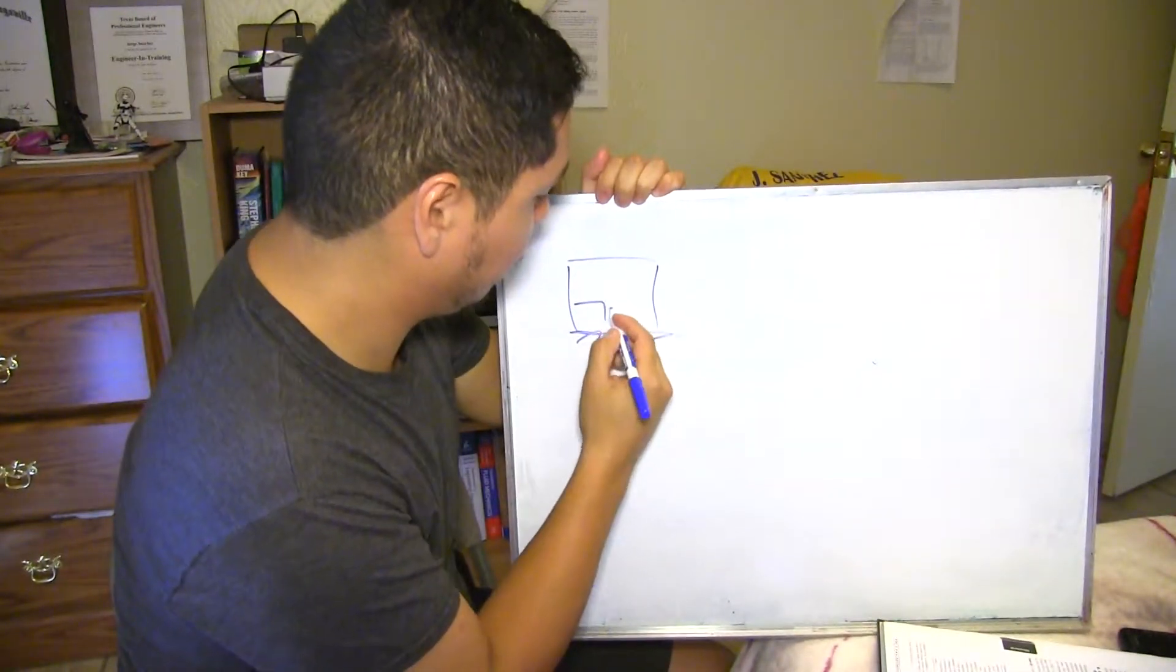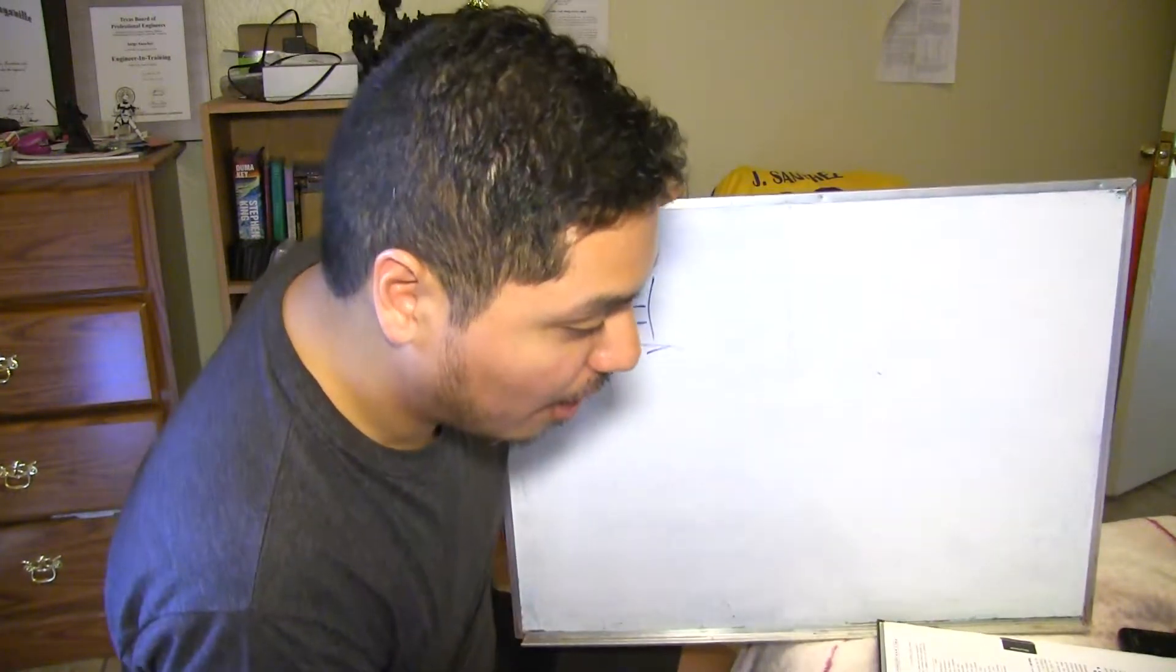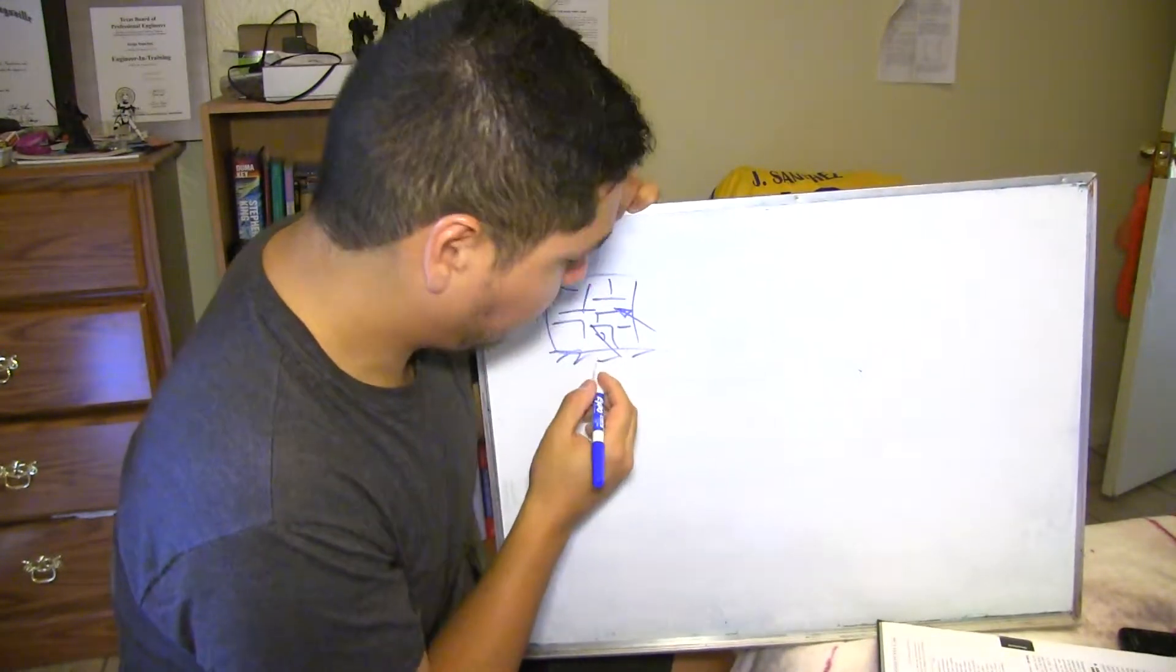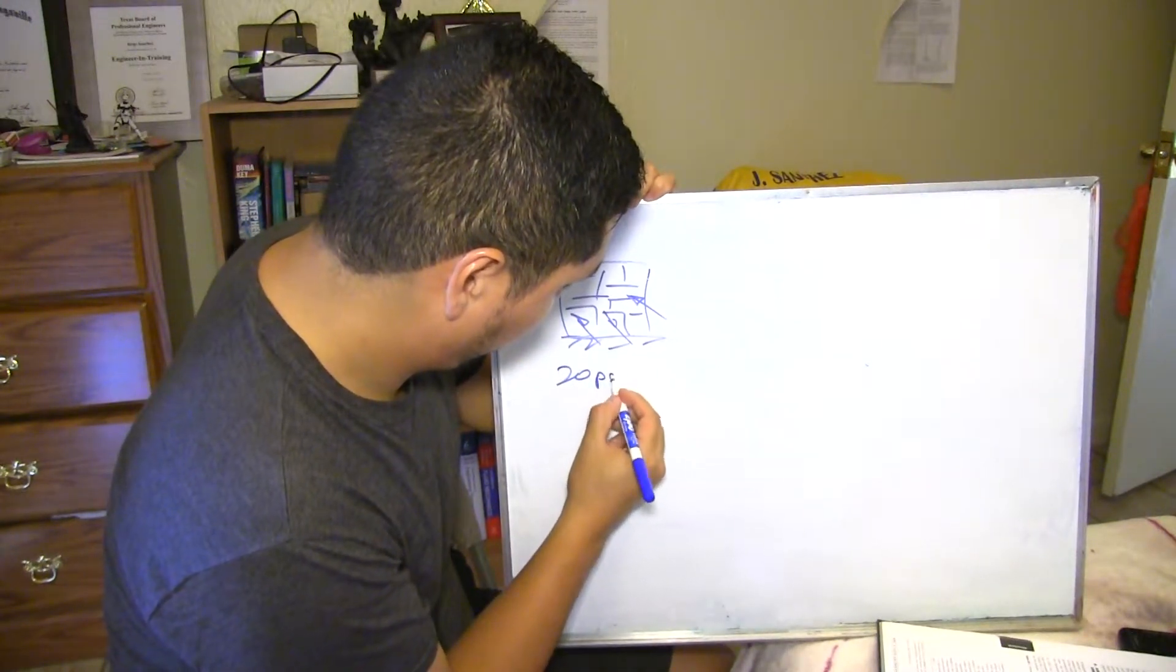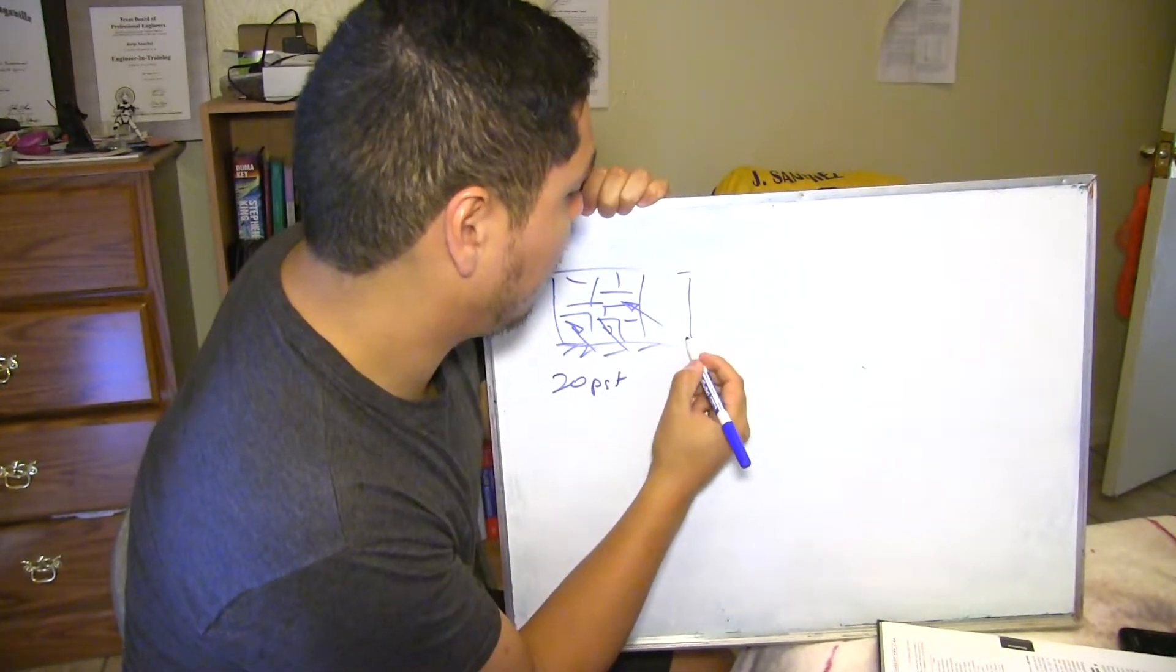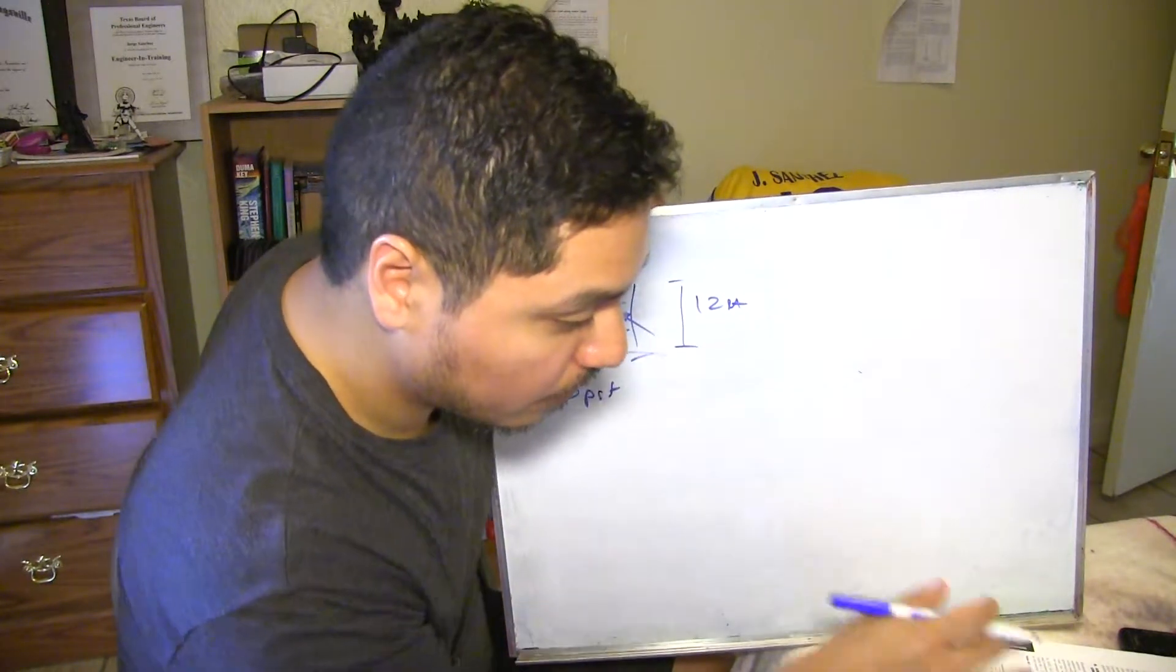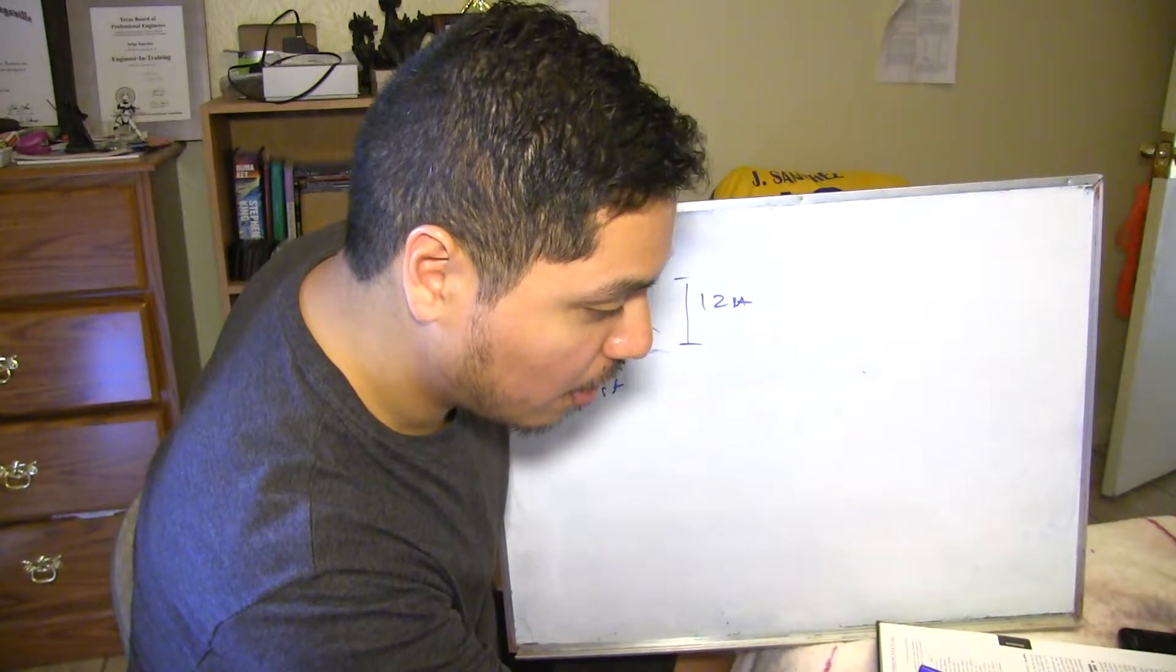There you go, it's a masonry wall, you get the idea, right? And this wall is going to be taking a wind load of 20 PSF. Now for example, the wall is 12 feet high, and you have a simple support at the top and the bottom.